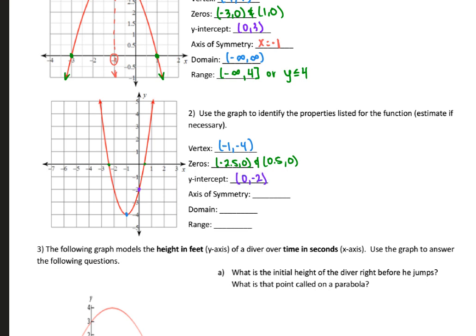My axis of symmetry is the vertical line that cuts my parabola in half. In that case, it's going to be x equals negative 1. My domain, just like the previous one, gets infinitely wide, so it's negative infinity to positive infinity. My range: the lowest my parabola goes is negative 4, and the highest it goes since it continues on forever up is going to be to infinity. The other way we can write this is y is greater than or equal to negative 4.